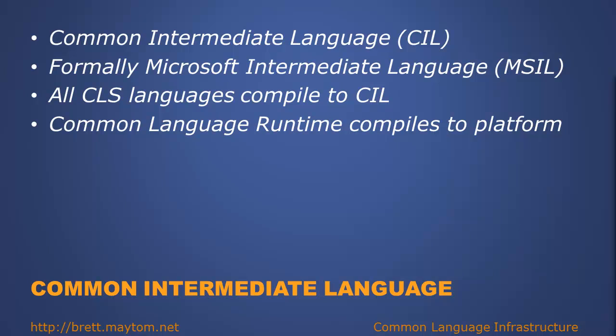The common intermediate language. When applications are compiled in Microsoft .NET, they are compiled or translated into a common intermediate language. The common intermediate language was formerly known as the Microsoft Intermediate Language, or MSIL. All CLS compliant languages compile to the common intermediate language. When an application is actually run, the common language runtime then compiles the common intermediate language into platform-specific assembly or machine code.